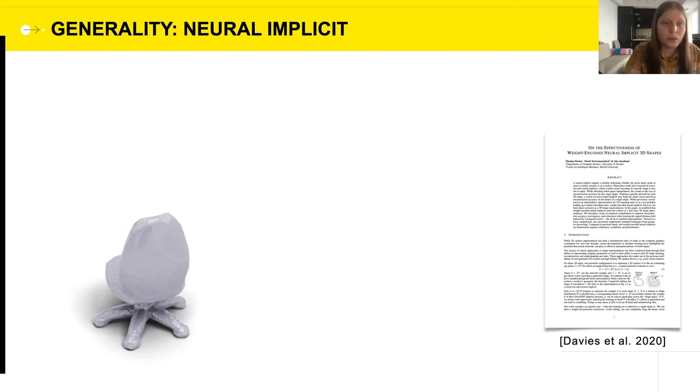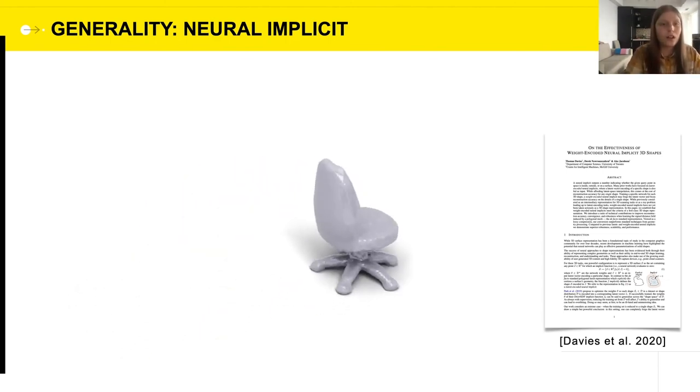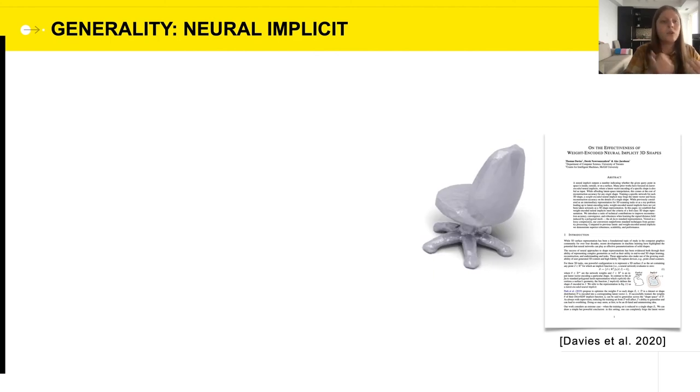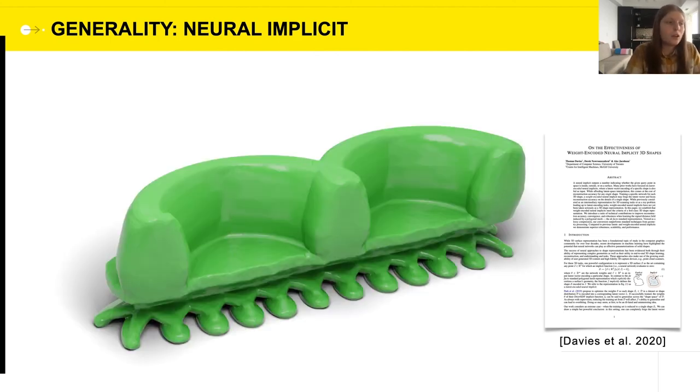Recently, implicit shapes have also been fashionable, because they are used as representations in many machine learning applications. For example, here we use a neural network representation of this chair, as obtained by Davies et al., as an input shape for our algorithm, and obtained its swept volume.